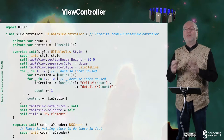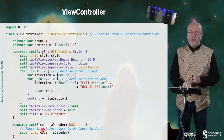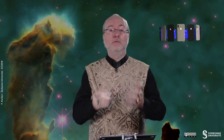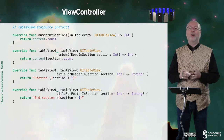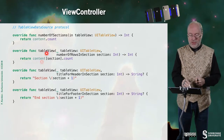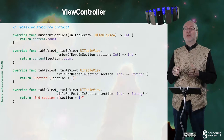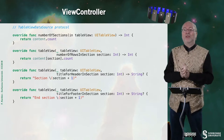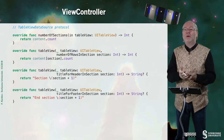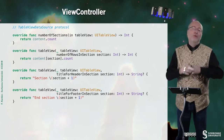Now we come to the table view data source protocol. We inform the table view controller of the number of sections, which is content.count — the number of elements in the first dimension of our array, since the first dimension describes sections. For the number of rows in a given section, we access the second dimension for that section and return its count. That's the easy way.